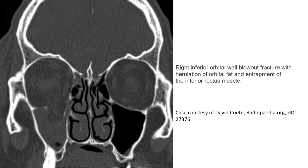Let's see this first case of orbital fracture. In the skull CT, or head CT, in bone window, what we can see here is the right inferior orbital wall blowout fracture with herniation of orbital fat and entrapment of the inferior rectus muscle, as you can see here in the image.